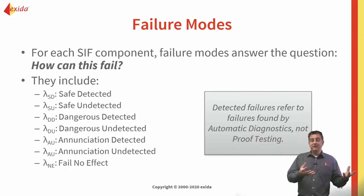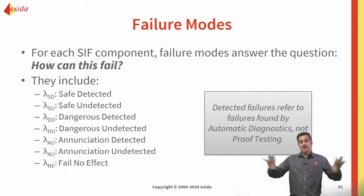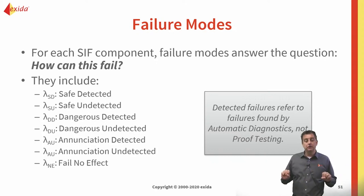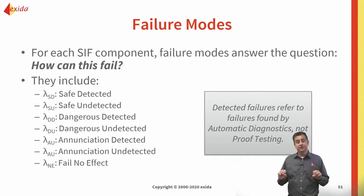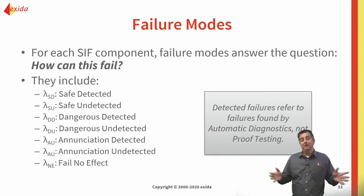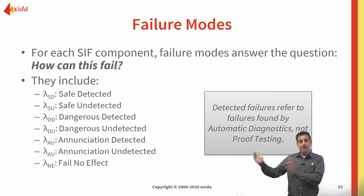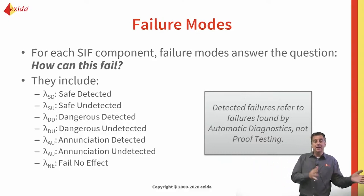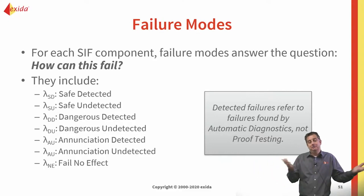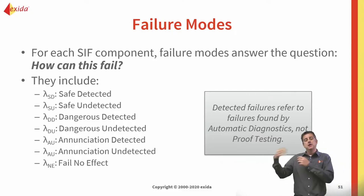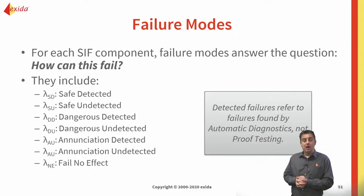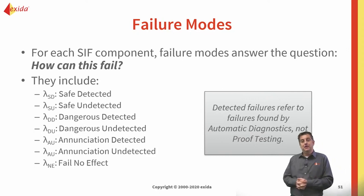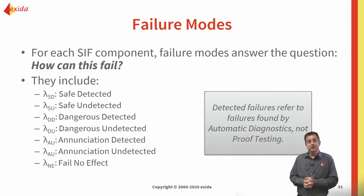In a single non-redundant system, safe detected and safe undetected failures will both produce the same output — the output goes to the safe state. In one case you know a failure caused it; in the other you won't immediately know the cause and will need to investigate. In both cases, the output is the same.